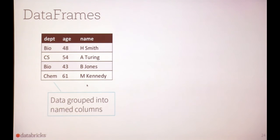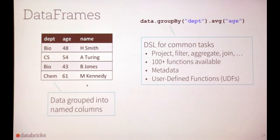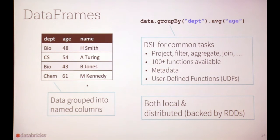Hopefully you're familiar with DataFrames — the concept is data grouped into named columns, such as department, age, and name, where columns can have different types. We can run simple queries like grouping by department and taking the average age. There's a DSL for common tasks — projection, filtering, aggregation, and so on — with over a hundred functions available, support for metadata, and user-defined functions so you can tailor your queries. These have both local and distributed forms, where the distributed one is backed by RDD and gains that resiliency.